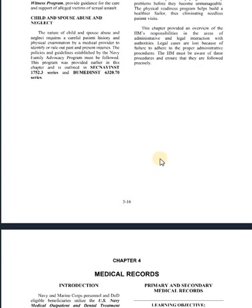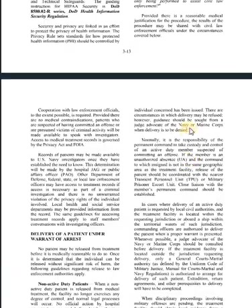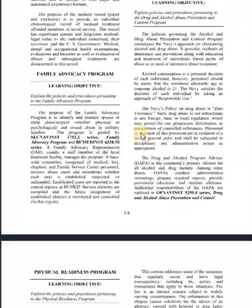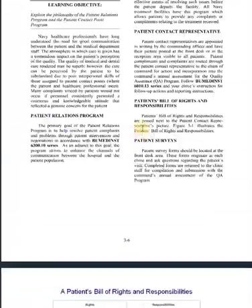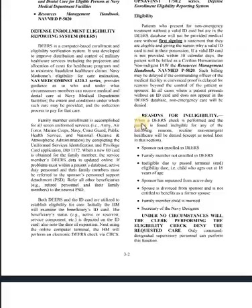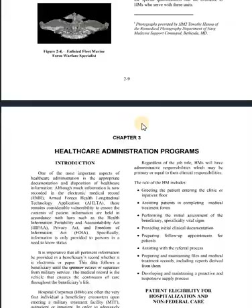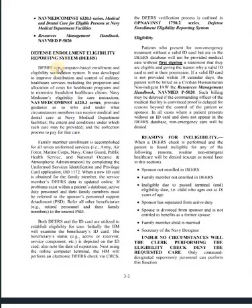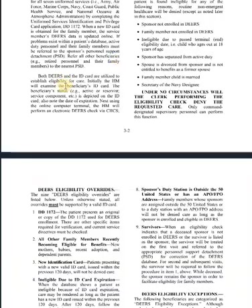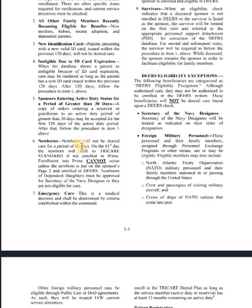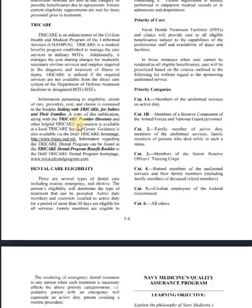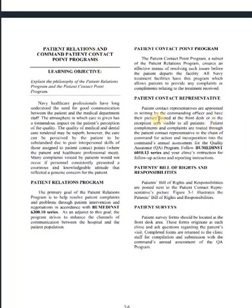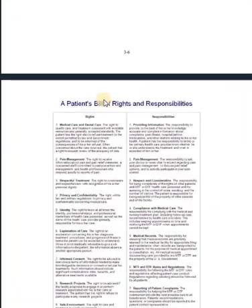That's really it for this chapter. The first part is probably the most important. Quick review: DEERS and eligibility, TRICARE, dental care eligibility, QA program, and the customer service program are the key topics to focus on.